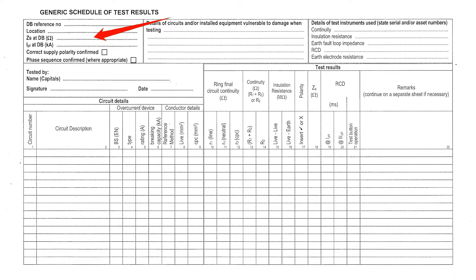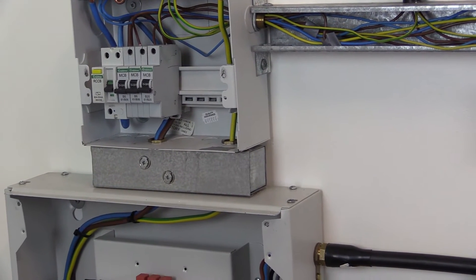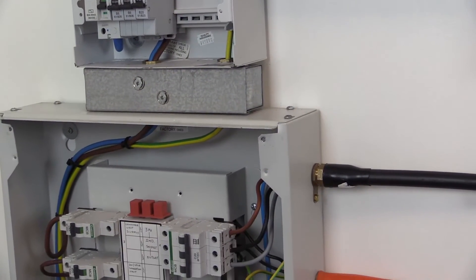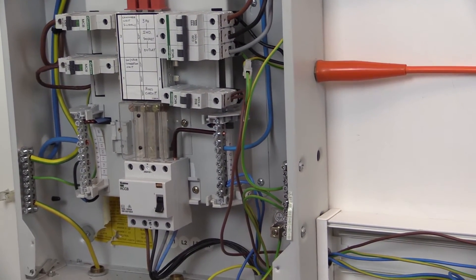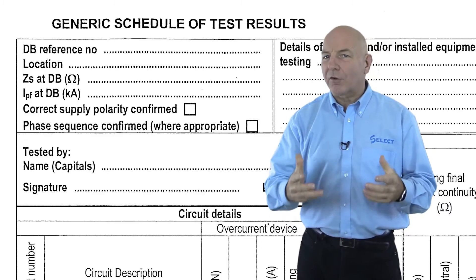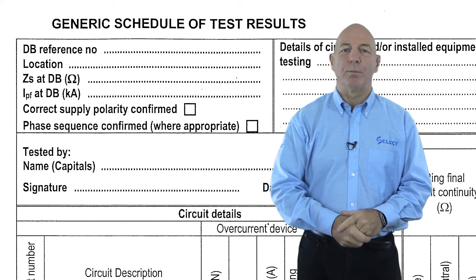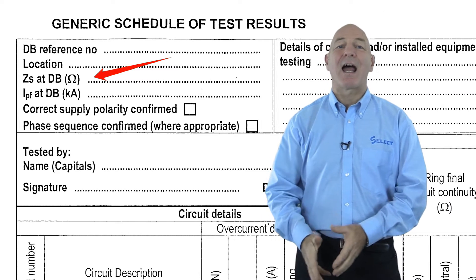The three values measured should be noted, and it is the highest value obtained that will be recorded as the earth fault loop impedance at the DB, recorded in ohms in the top left-hand side of the schedule of test results. On larger installations, the earth fault loop impedance external to the installation may not be at the incoming supply of the distribution board being worked on, as the actual incoming supply to the building may be located remote from this distribution board. The external earth fault loop impedance measured at the distribution board in this situation is therefore referred to as the ZS at DB.